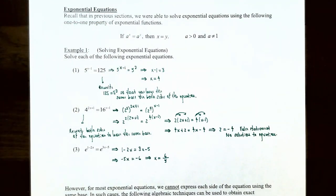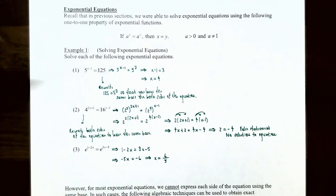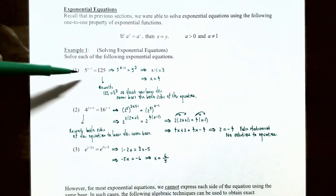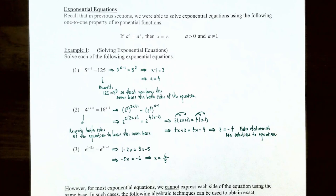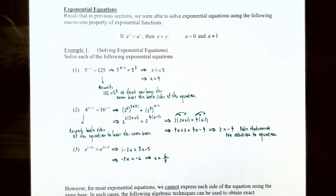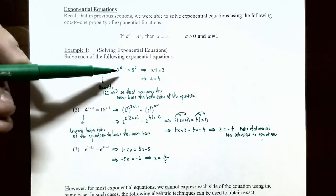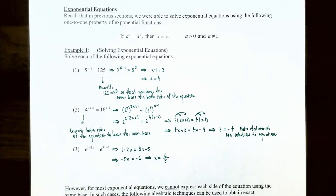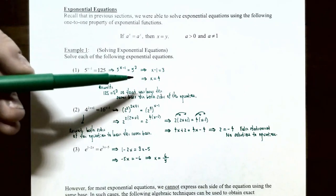Example one, solving exponential equations. Number one: base five raised to the exponent x minus one equals 125. Notice you have base five on one side, but 125 on the other. However, you can rewrite 125 as a power of five — five cubed. Now you have base five on both sides, so the exponents must be equal: x minus one equals three, giving the solution x equals four.